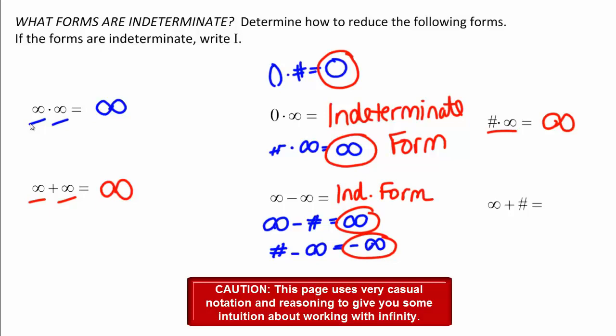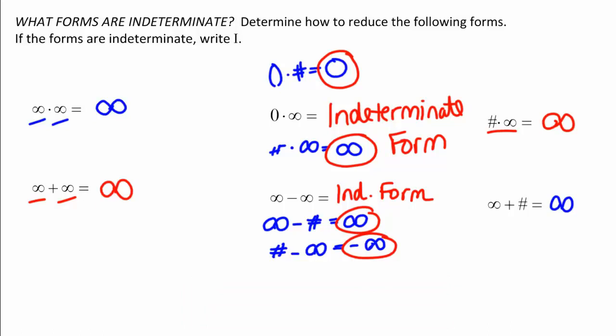Infinity plus a number just gives you infinity. It's impossible to go through every possible form of an answer you might have, so the idea is for you to think about whether there's a conflict in what the answer could possibly be, or if there's no conflict and you can just know what the answer is. If there's a conflict, that means you have an indeterminate form, and an indeterminate form always means do more algebra.